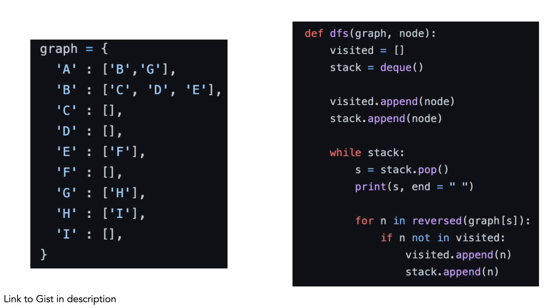Here is the code for depth-first search. There is a link to a working Python example in the description. The code is very similar to breadth-first search, except a stack is used instead of a queue. On the left is our graph represented as an adjacency list. Let's walk through the code on the right.